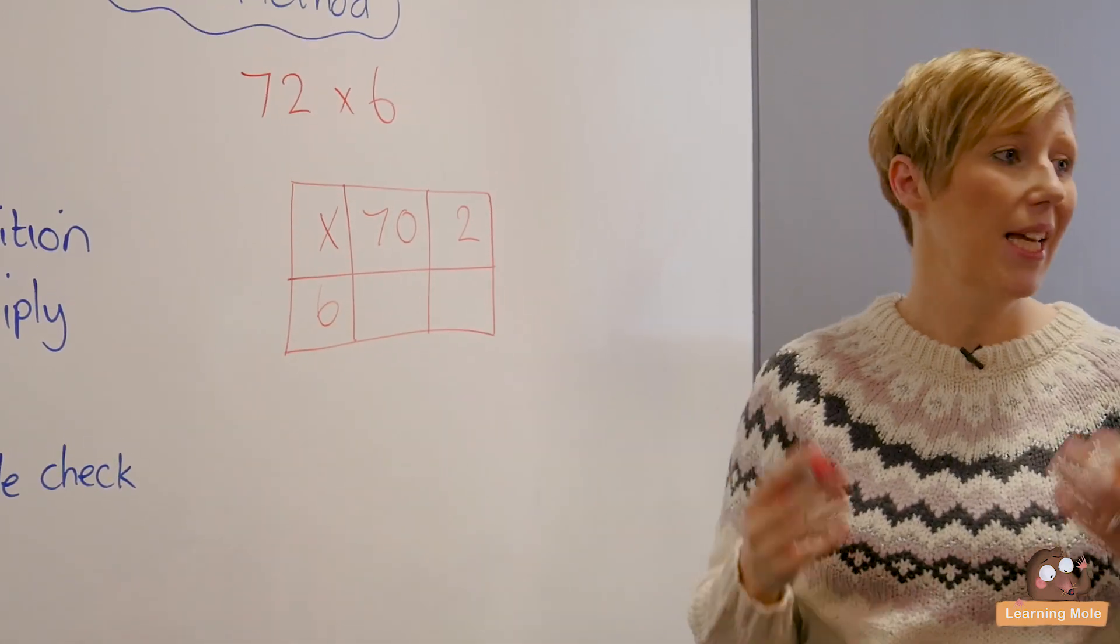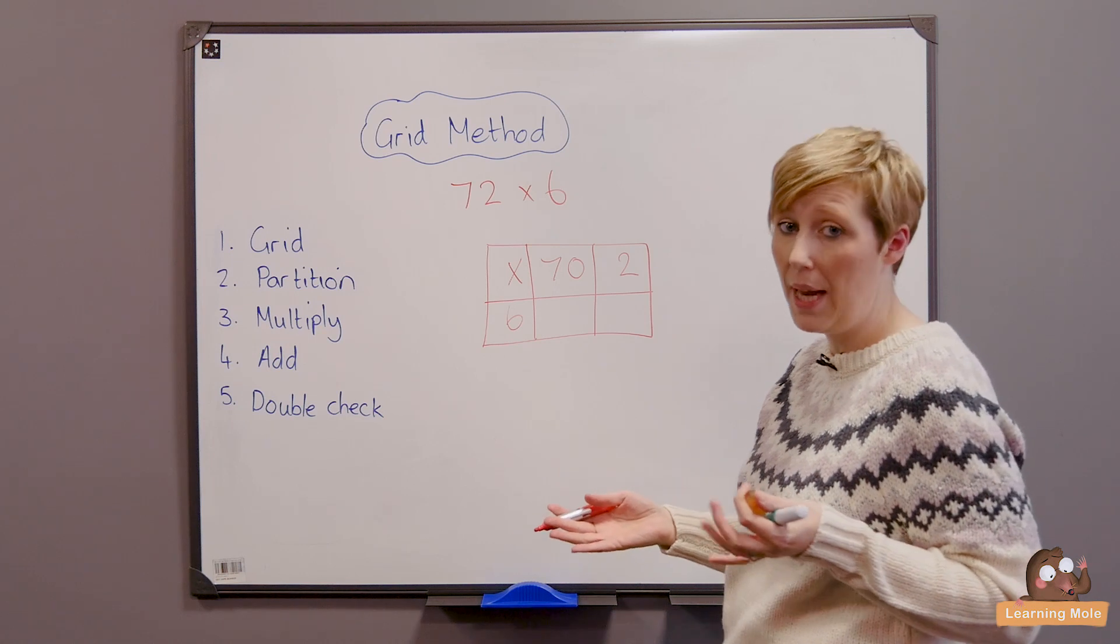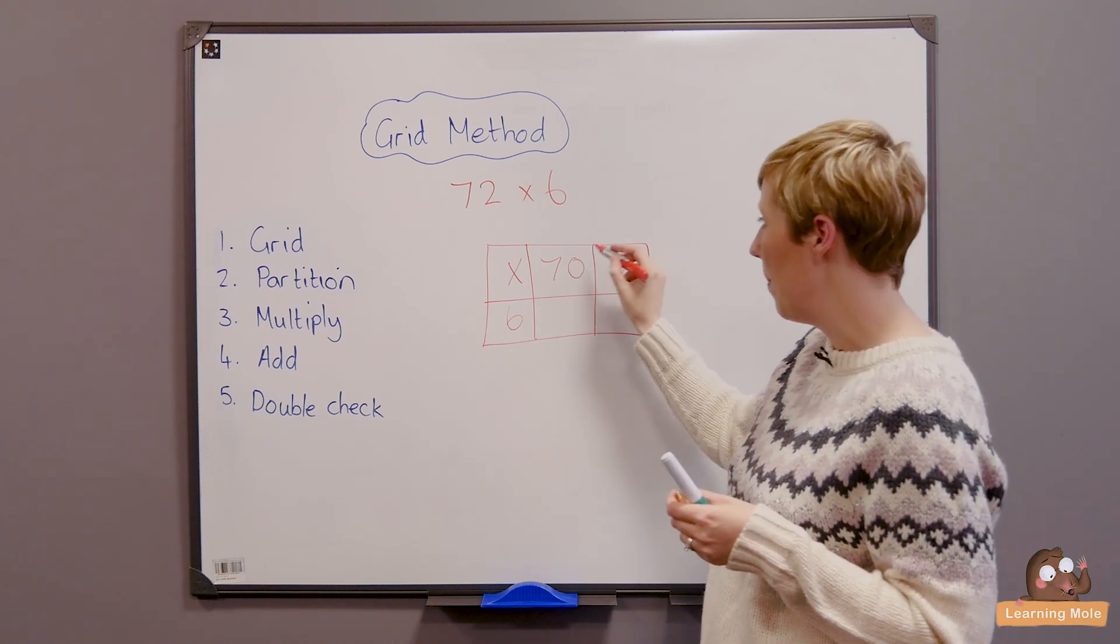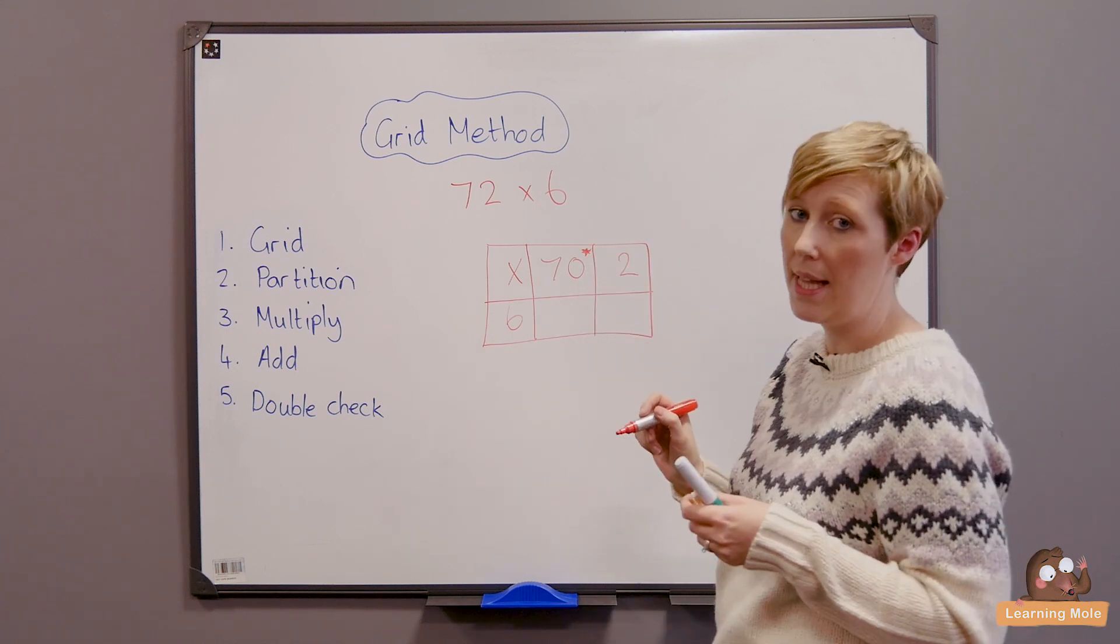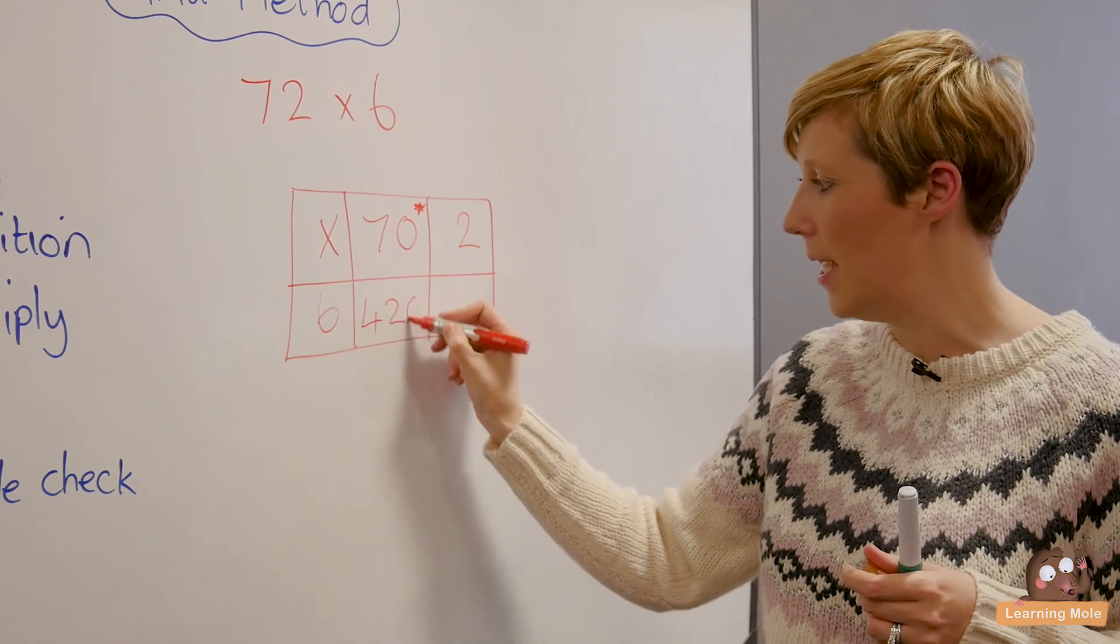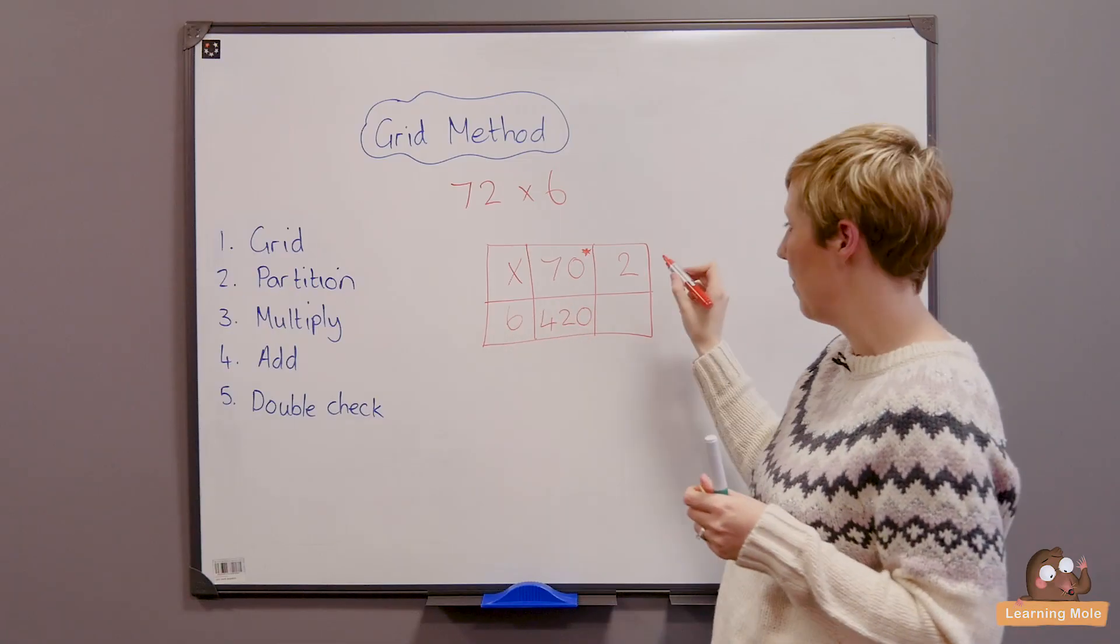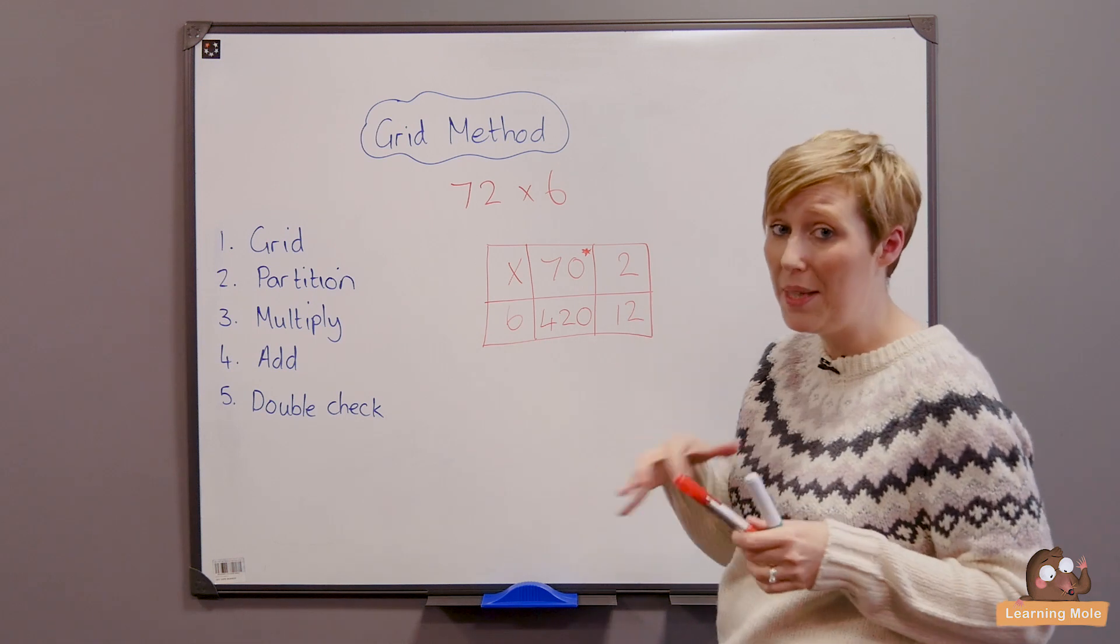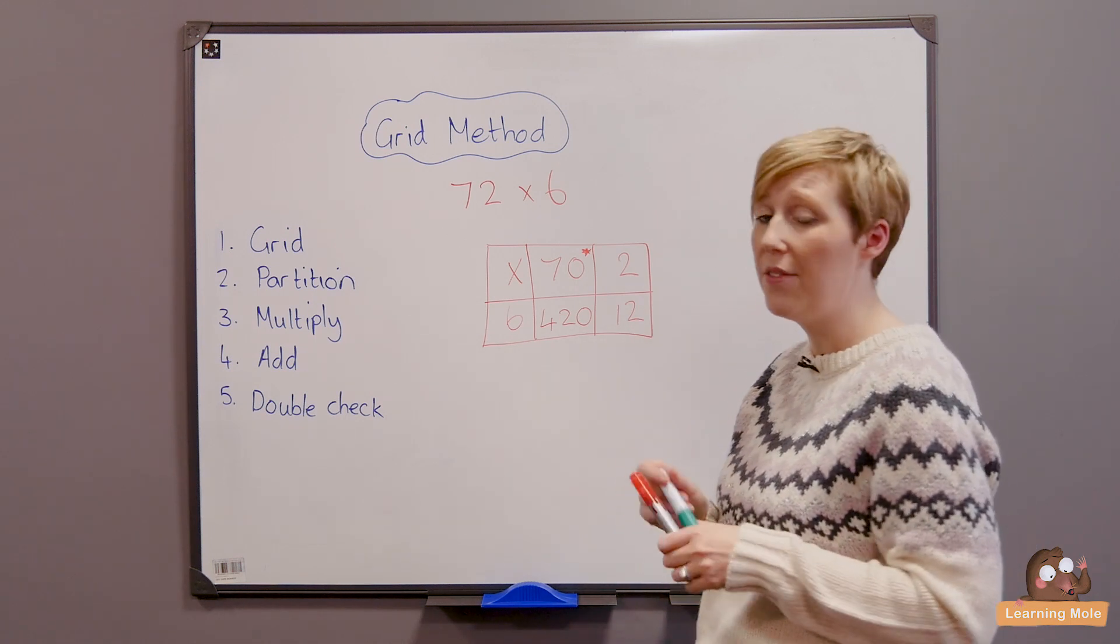I'm going to do 6 times 70. I don't know my 70 times tables but I do know what 6 times 7 is. It's 42. I need to remember, put my star up there, that I'm not multiplying by 7. I'm actually multiplying by 70 so I know it's 420. I'm going to do my 6 times 2 which I know is 12, and if I don't know that I've got my multiplication grid that I can look through and find my answer.